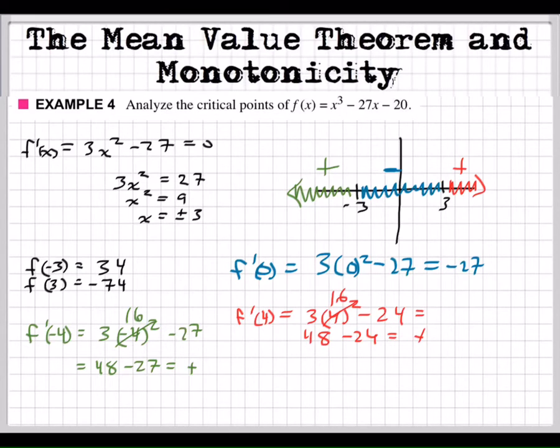All right, now, can you tell, because you know where it's increasing and decreasing, can you tell if negative three is going to be a maximum or minimum? We know it's increasing over here, and then it starts decreasing. Is this a maximum or minimum? That's a max. Okay, so at negative three, we're going to find our max. And right here, because it decreases, then increases, that means we're going to find our minimum.